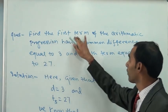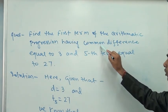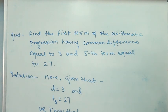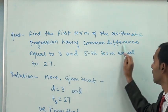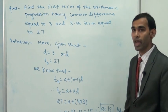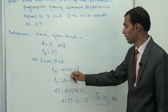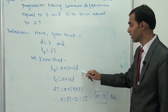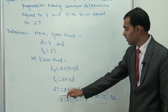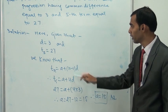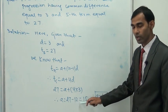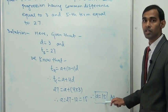Another example: Find the first term of the arithmetic progression having common difference equal to 3 and 5th term equal to 27. Given: d = 3 and t5 = 27. We know that tn = a + (n-1)d, so t5 = a + 4d = a + 4×3 = a + 12. Since t5 = 27, a = 27 - 12 = 15. Hence the first term is equal to 15.